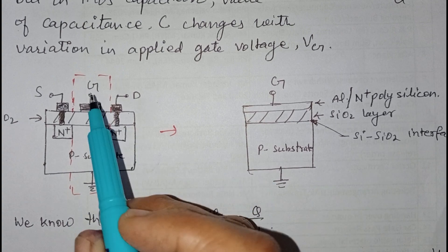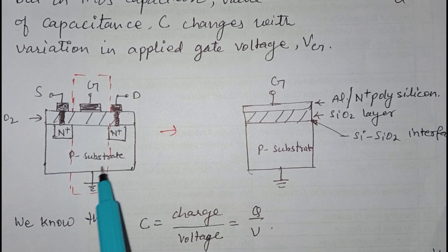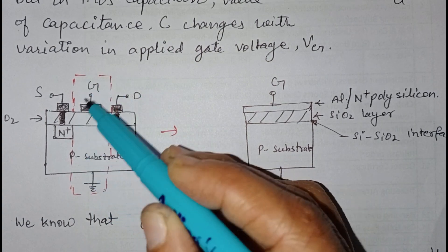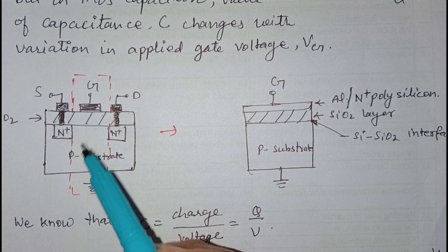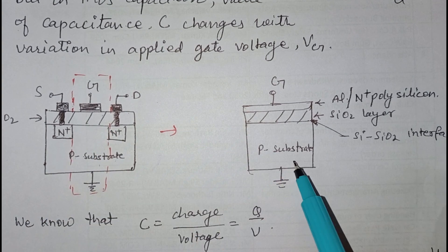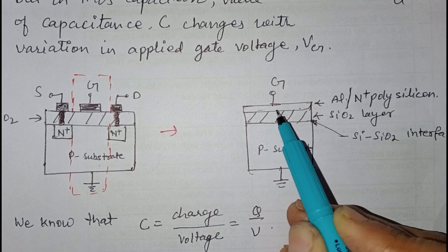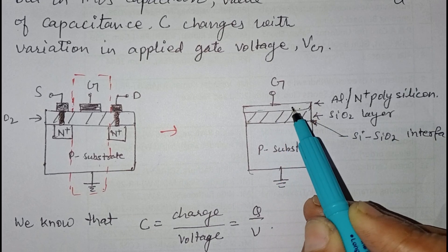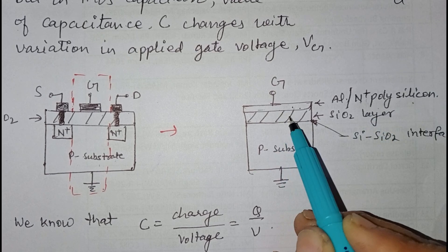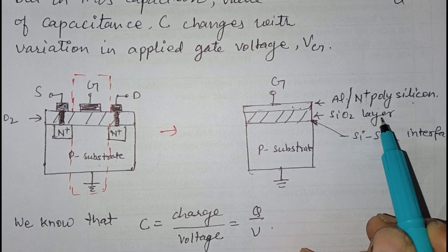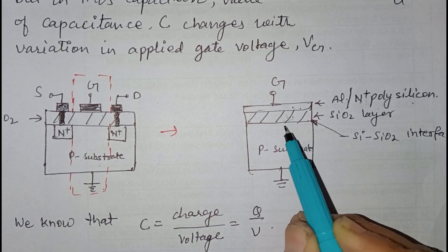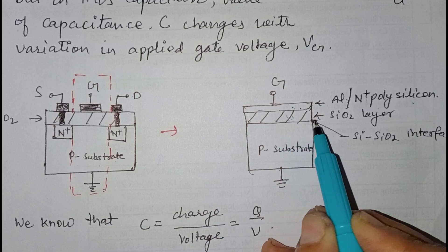Here is the gate, source, and drain, and this is the p-type substrate. The middle portion of this MOSFET is used as a MOS capacitor. If we cut out this portion, it will look like this. This is the gate, and this is the metal contact. This metal contact may be of N-plus polysilicon type, and this is the silicon dioxide layer, which acts as a dielectric.